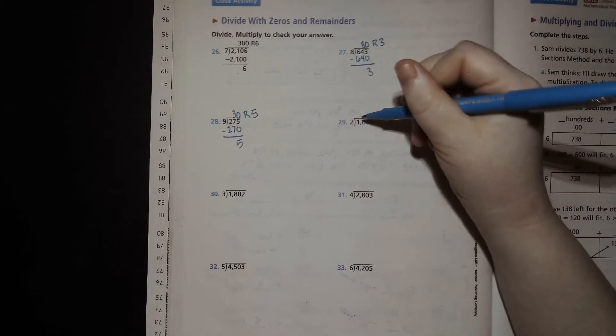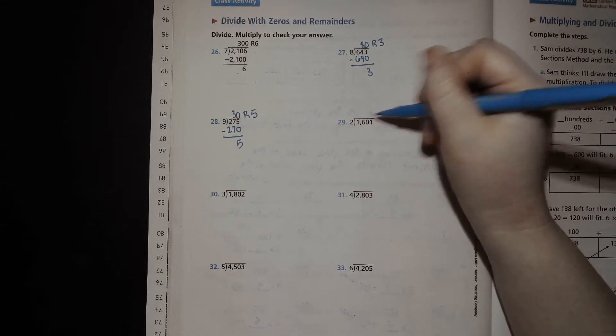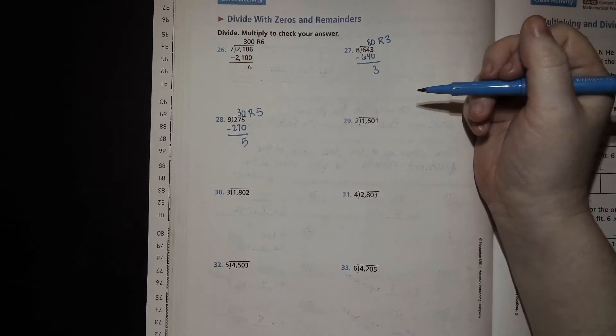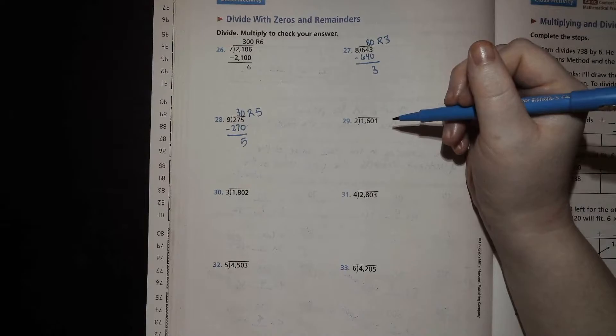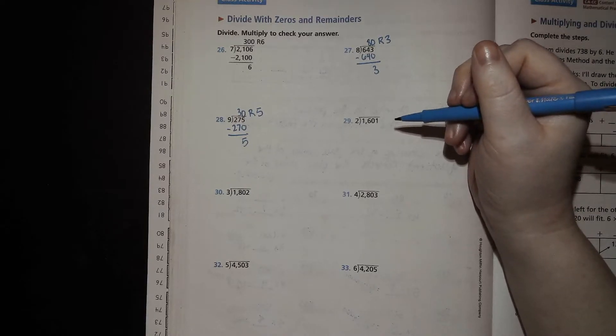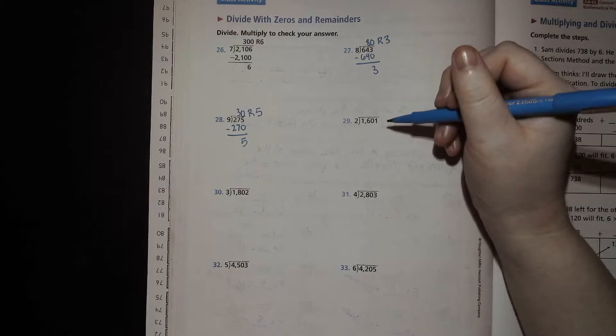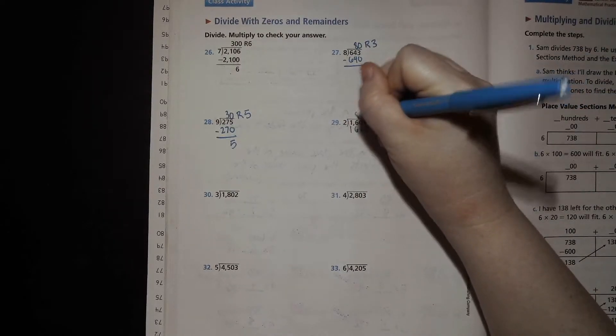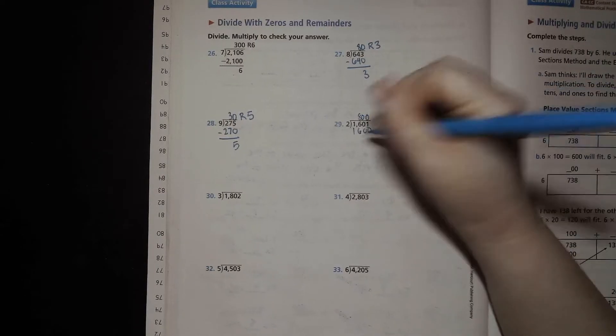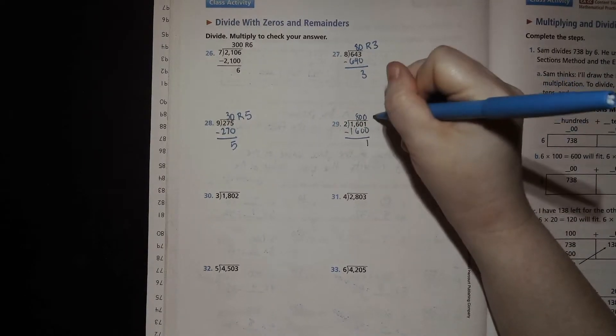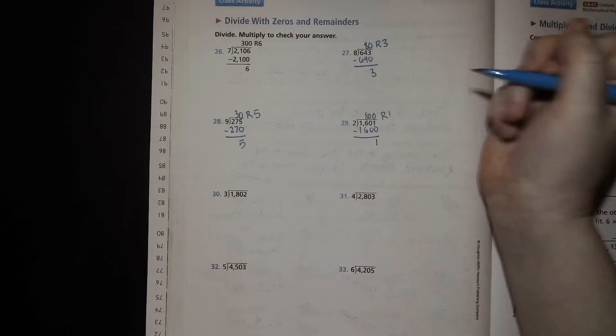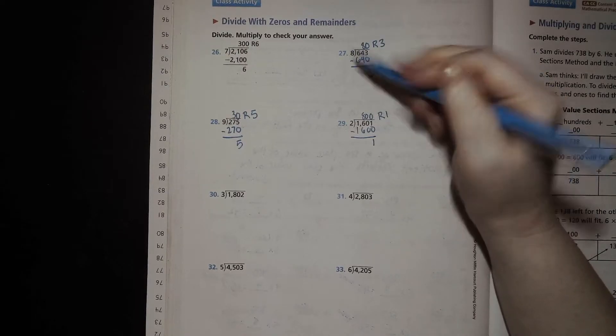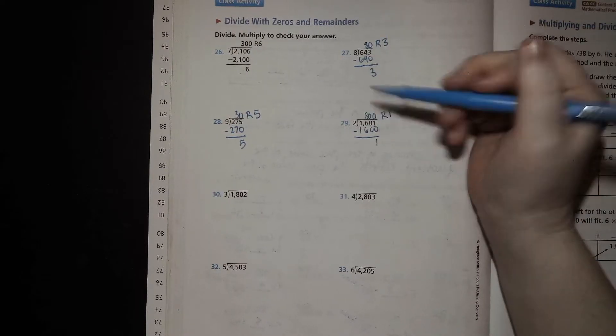All right. Let's look at this one. 1601 divided by 2. Well, 16 is 2 times what? 8. So 1600 would lead us to 800, right? And then we'll subtract that. We'll have that one left over. So 800 remainder 1. We're always looking to see if our remainder is bigger than our divisor. And if it is, we have to adjust, right? But it isn't in this case.